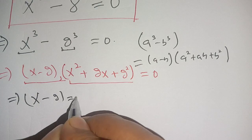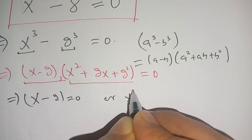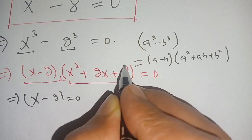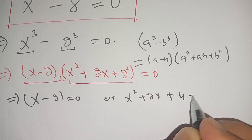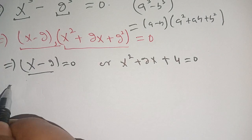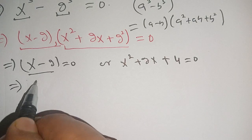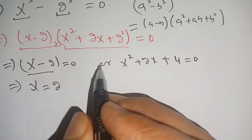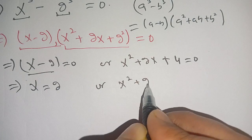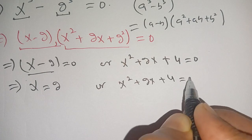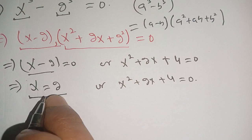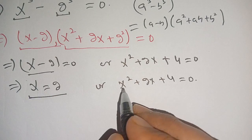Now we equate both terms to zero. We get x minus 2 equals 0, or x squared plus 2x plus 4 equals 0. From the first equation we get x equals 2.